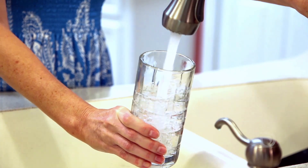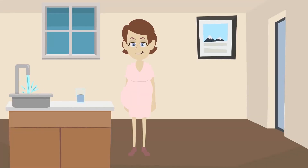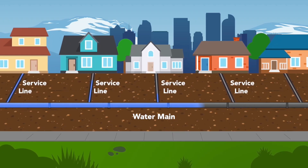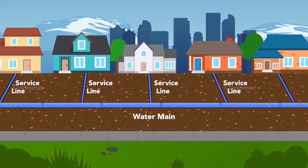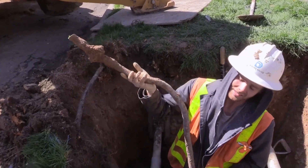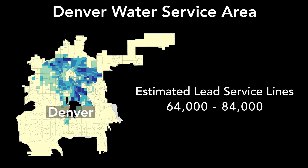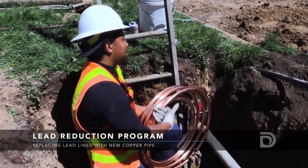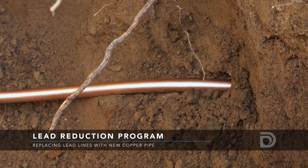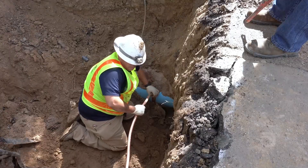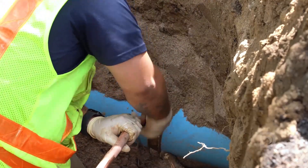Lead can get into water if it passes through service lines that are made of lead. This is important because lead in water can have significant health impacts, especially for pregnant women, infants, and young children. Service lines are the pipes that connect Denver Water's water mains in the street to homes and businesses. As part of the lead reduction program, Denver Water has an estimated 64,000 to 84,000 properties with lead service lines, which will be replaced with new lead-free copper pipes at no direct cost to the customer.